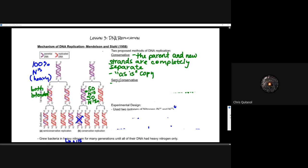When we look at that conservative approach, we're talking about the parent DNA and new strands being completely separate — what we call an as-is copy. Looking at the conservative replication component on the right side of that diagram, you start off with the purple strands and that gets copied in its entirety. The red strands are the entire copy, and we would expect the purple and the red strands to be completely separate from each other.